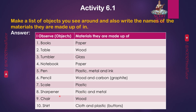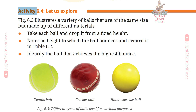8. Sharpener — made of plastic and metal. 9. Chair — made of wood. 10. Shirt — made of cloth and plastic (buttons).